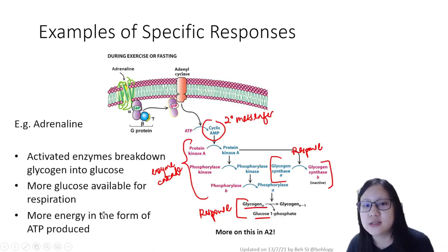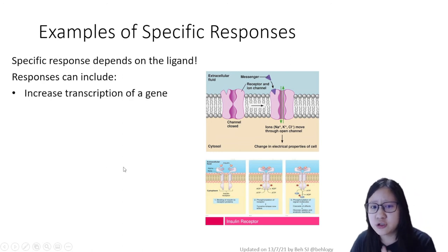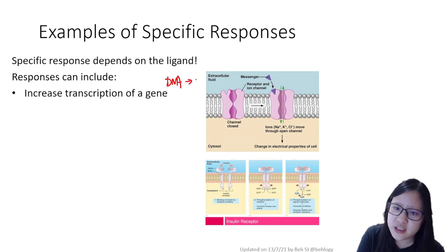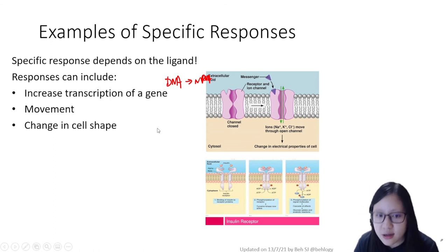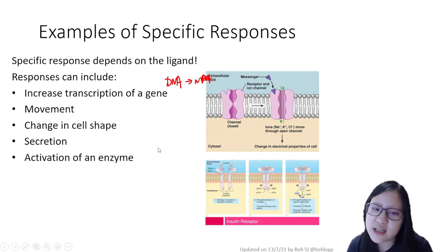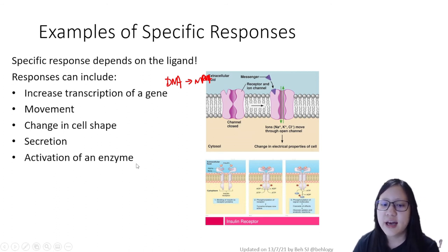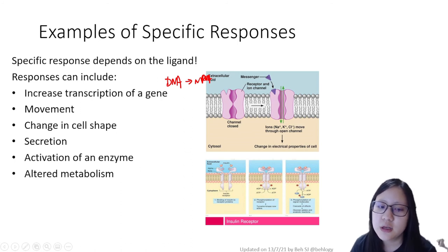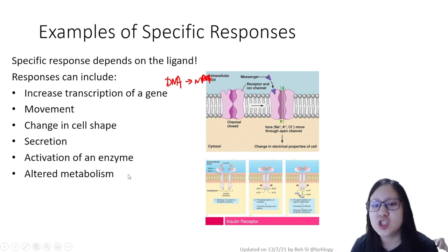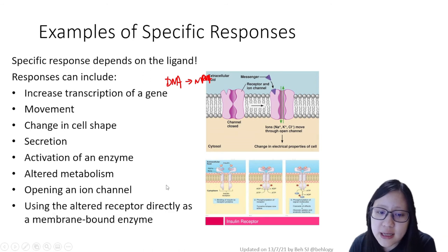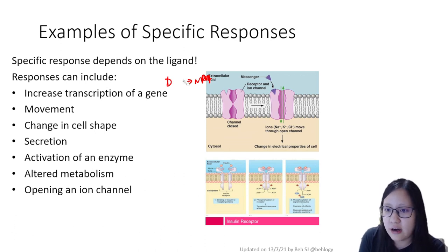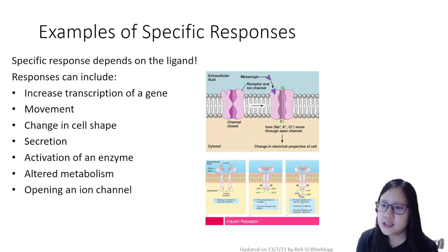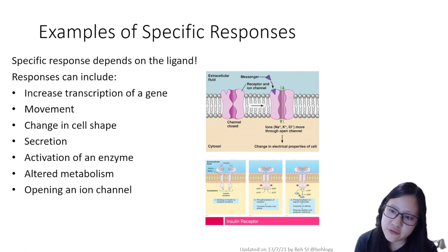There are other types of specific responses beyond the adrenaline example. Responses can include: transcription of a gene (conversion of DNA to mRNA and later to protein), movement of the cell, change in cell shape, secretion of another ligand, activation of an enzyme, or altered metabolism. It can even result in the opening of an ion channel — where a ligand-gated channel protein opens directly, allowing other ions to pass through, without requiring the full complex cascade.